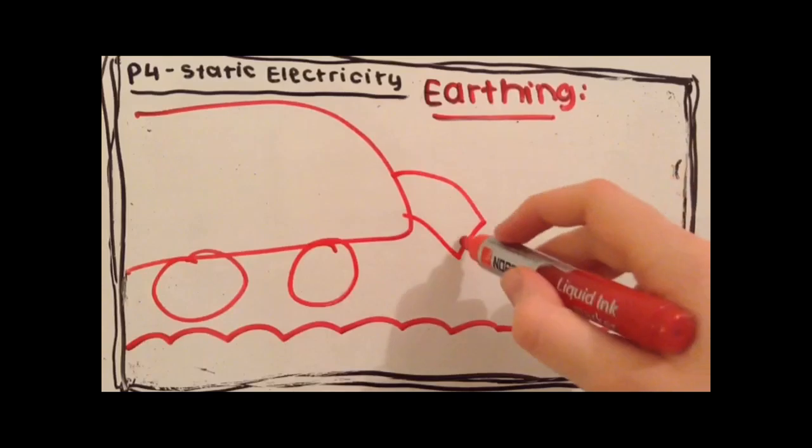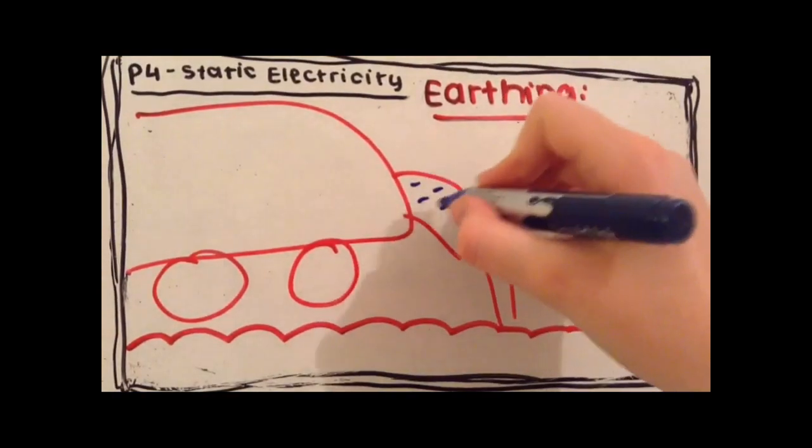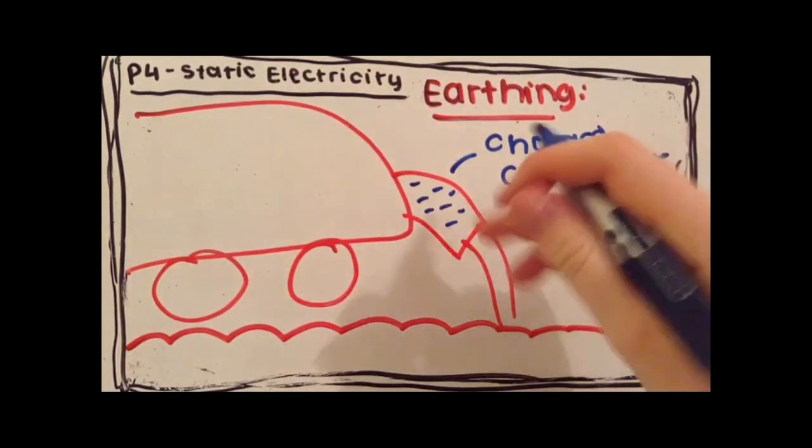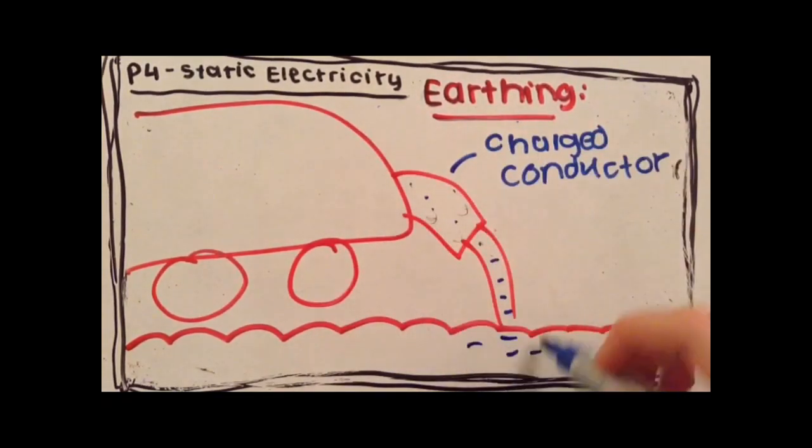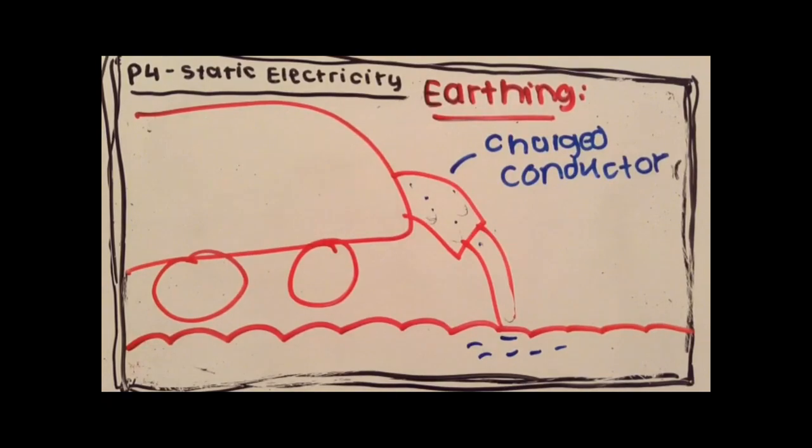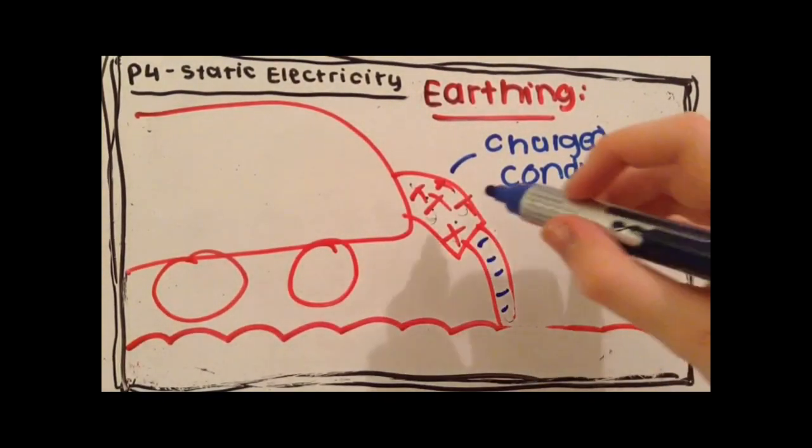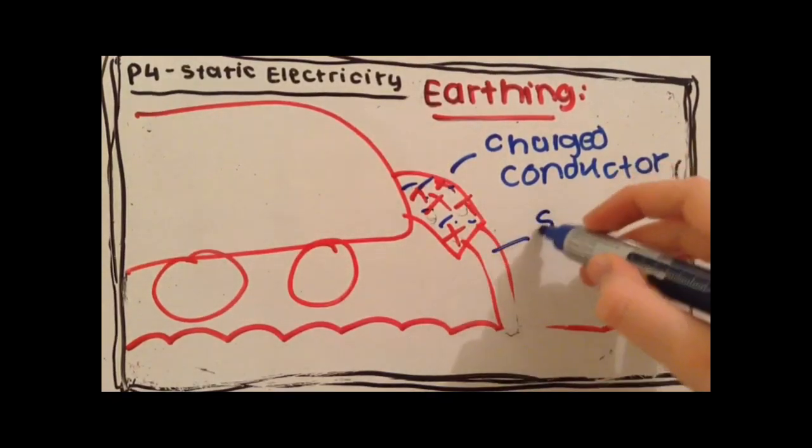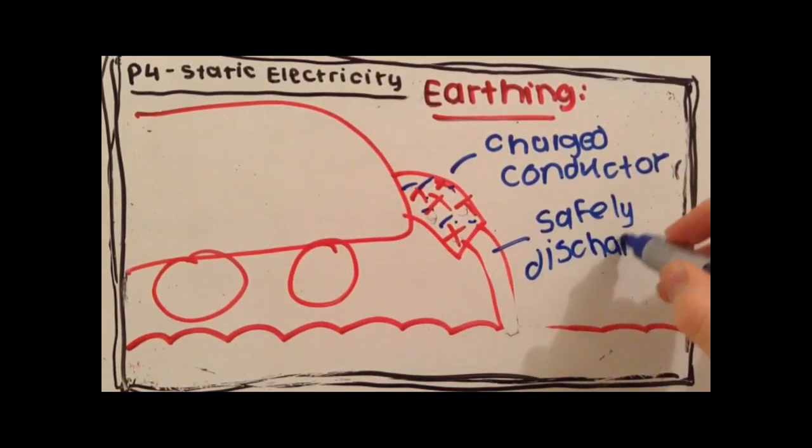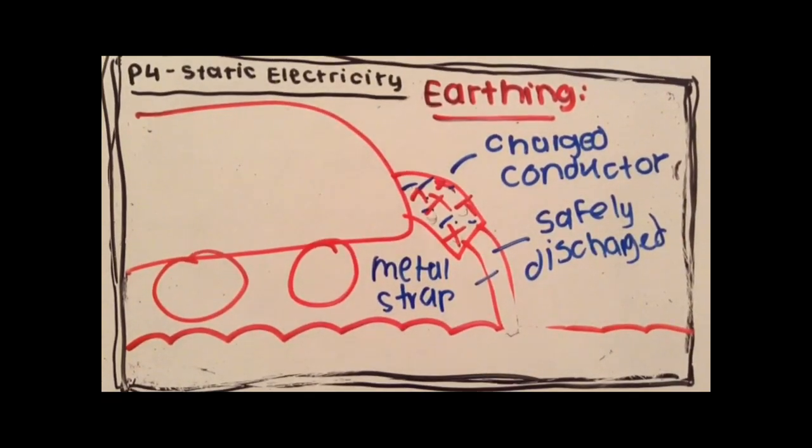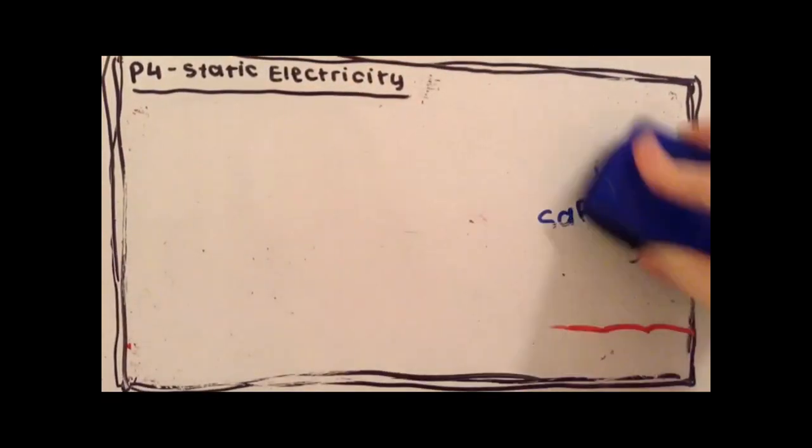A charged conductor can be discharged safely by connecting it to earth with a metal strap. Electrons flow down the strap to the ground if the charge is negative. Electrons flow up the strap from the ground if the charge is positive in the charged conductor. This means they will be safely discharged through the metal strap in earthing.